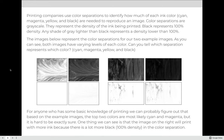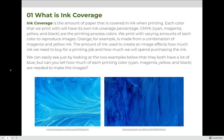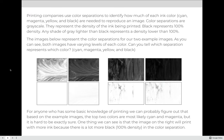As you can see, both images have varying levels of each color. Can you tell which separation represents which color — which one is cyan, which one is magenta, which is yellow, and which is black? Based on the example image being very bright blue and almost cyan on the left-hand side, we can probably figure out that the two darkest colors are cyan and magenta, though it's hard to be exactly sure which is which. One thing we can see is that the image on the right will print with more ink because the blacks are darker and denser.